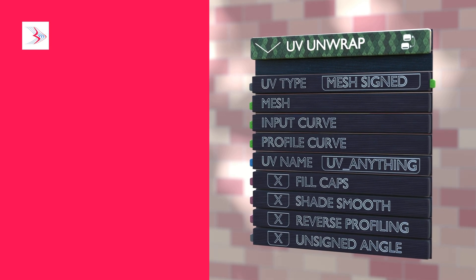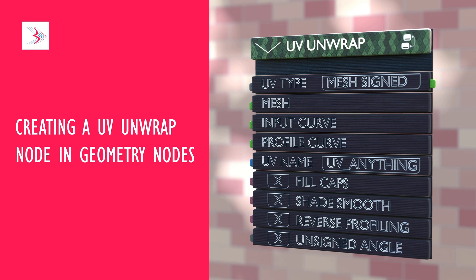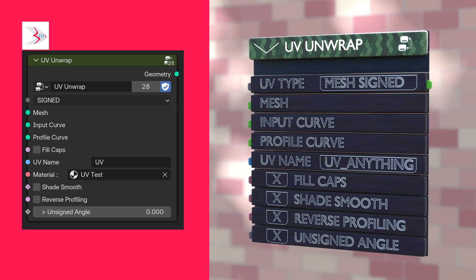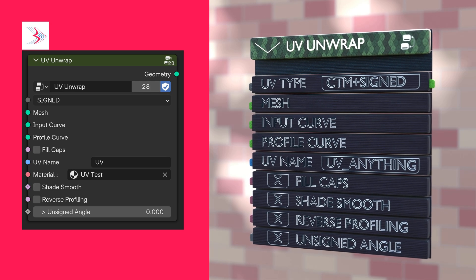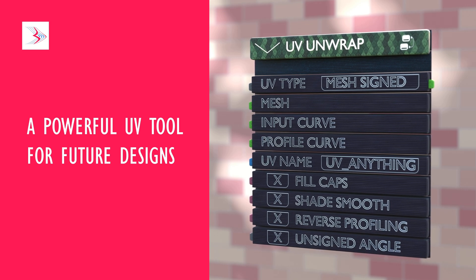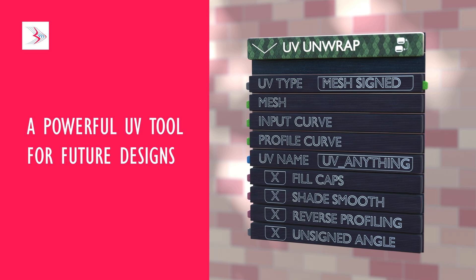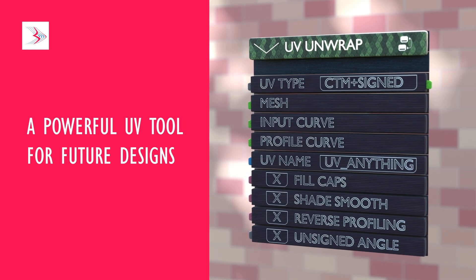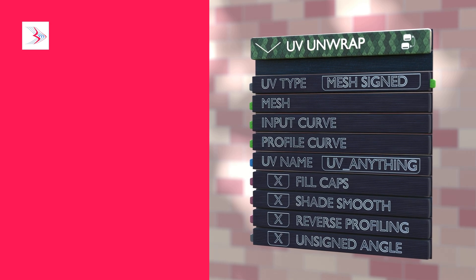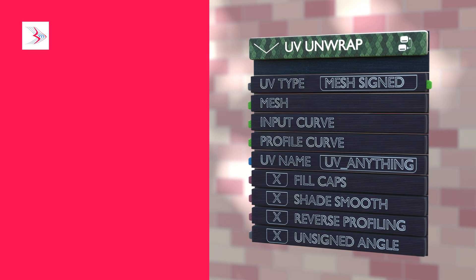Hello everyone. In today's video we're going to be learning how to create a UV unwrap node inside Blender — not the standard UV node you might see, but this node inside Geometry Nodes. We want to basically have a tool we can apply anywhere in our Geometry Nodes creations, and this has been really handy for me. If you've seen my previous tutorial you might have seen me use a version of these. So today we're going to be learning how to create this in Blender. Let's get started.